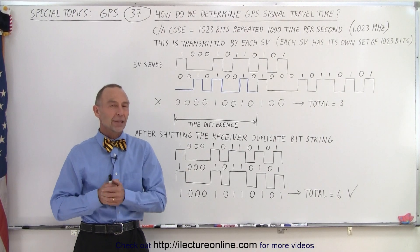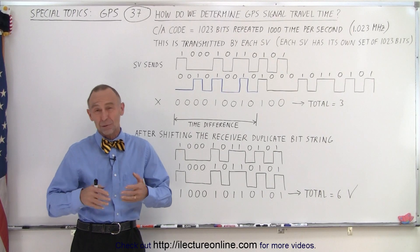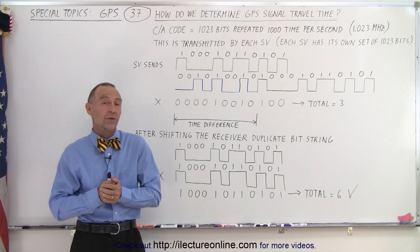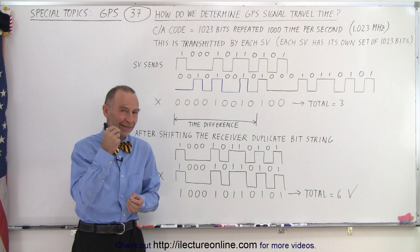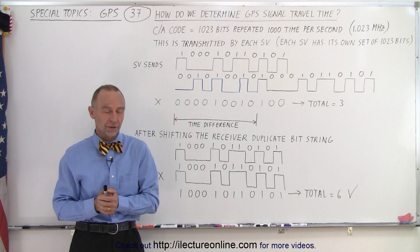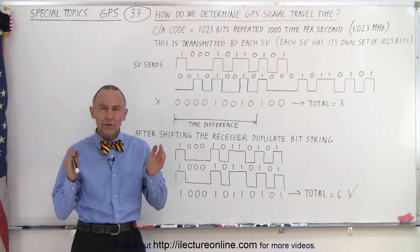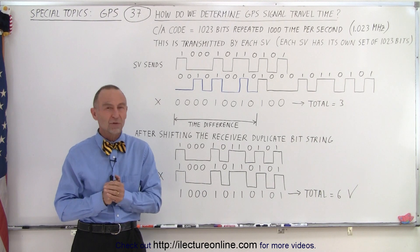Welcome to my lecture online. In the previous video we saw that it takes roughly 70 milliseconds for a signal to travel from the SV down to the receiver. But we want to know the exact time. So how do we do that?